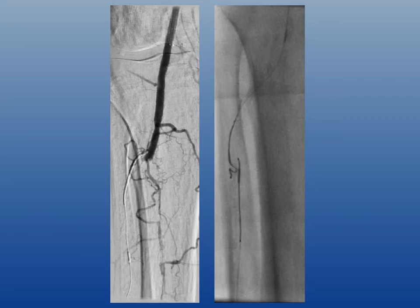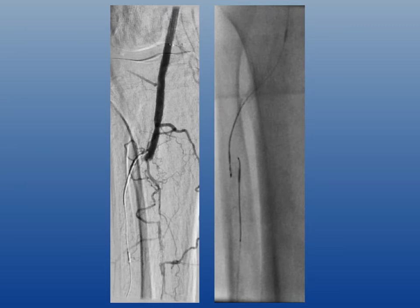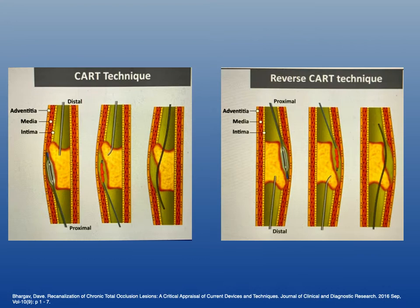I have access from above and below, with my catheter and guide wire systems in two different subintimal planes that are not communicating. I need to do something to get these two channels to communicate and achieve through-and-through access.